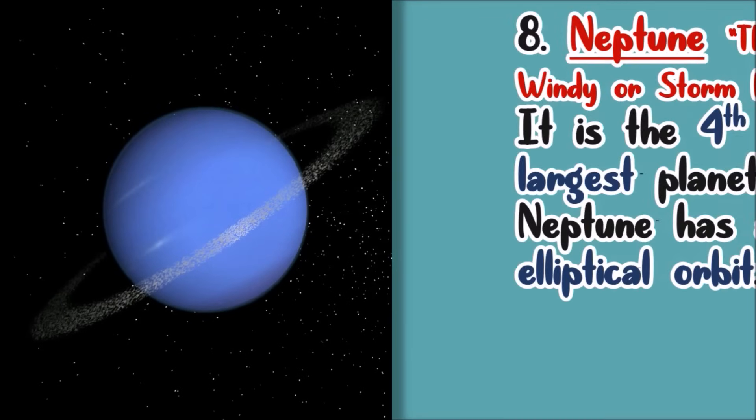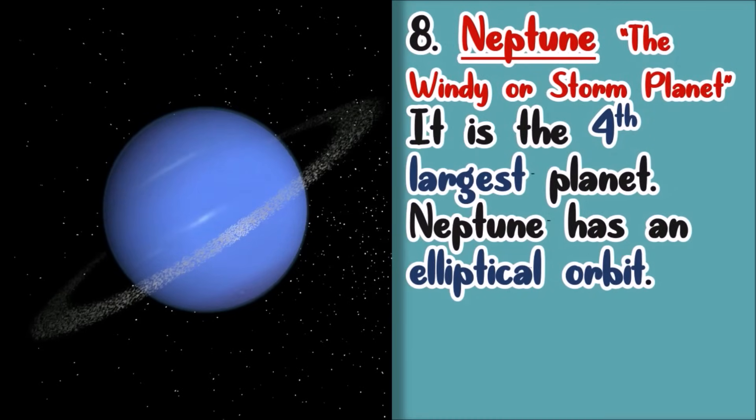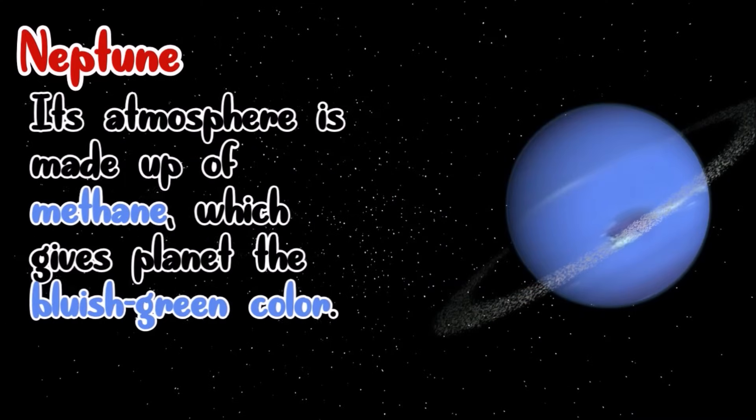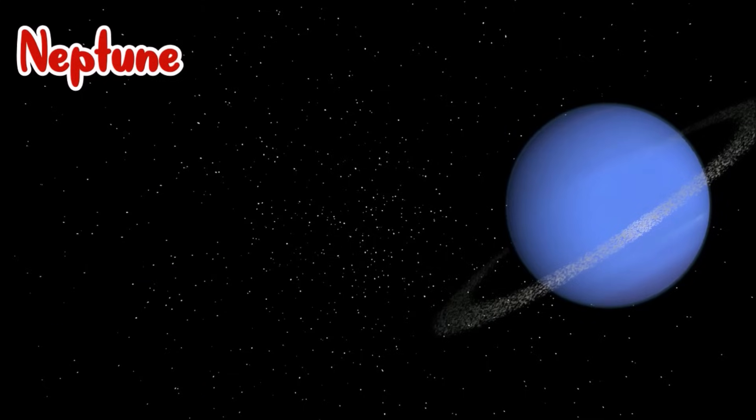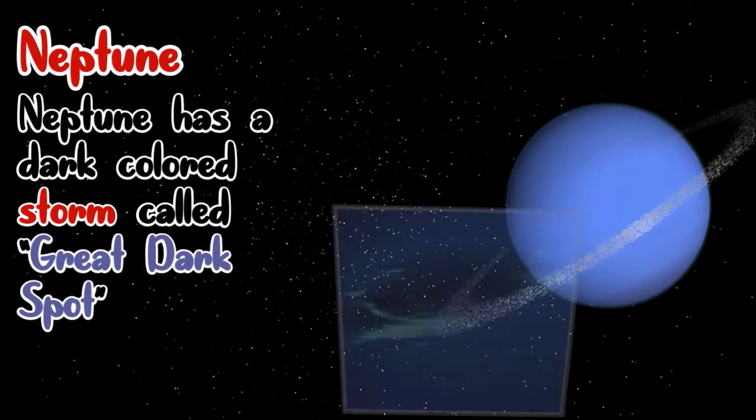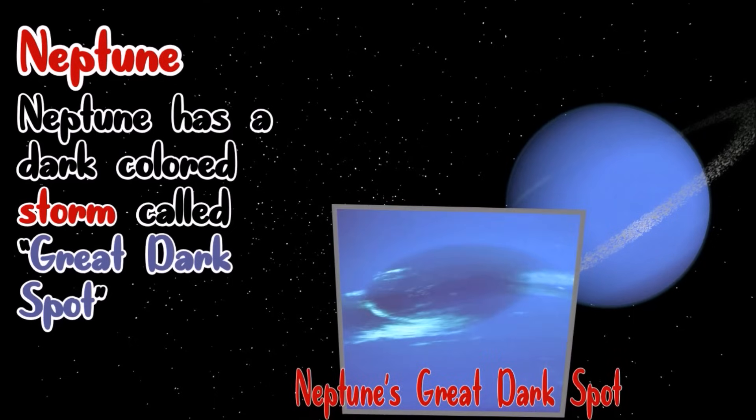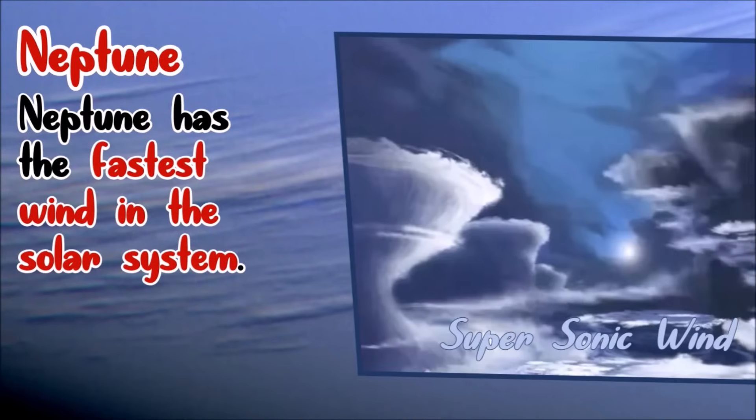Neptune. It is the Windy Planet, or also called the Storm Planet. Neptune is the fourth largest planet. Neptune has an elliptical orbit. Neptune's atmosphere is made up of methane, which gives the bluish-green color. Neptune has a dark-colored storm. It is called Great Dark Spot. Neptune has the fastest winds in the solar system.